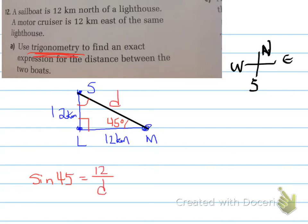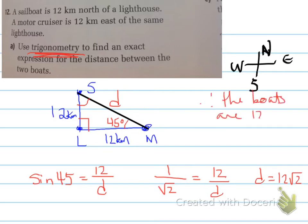So we set it up. Sine of 45 is equal to 12 over d. That is what we want for this problem. You take the sine of 45, represent it as 1 over root 2, is equal to 12 over d. Cross multiply, you find out that d is equal to 12 root 2. So the distance between the boats is 12 root 2 kilometers apart.